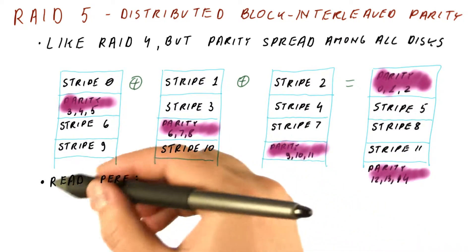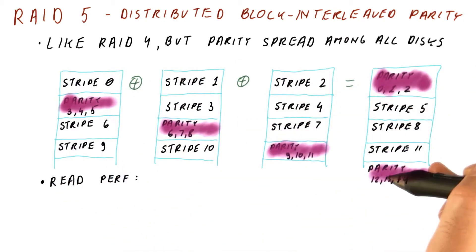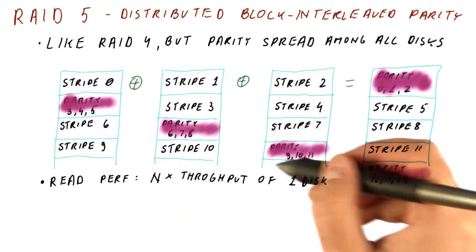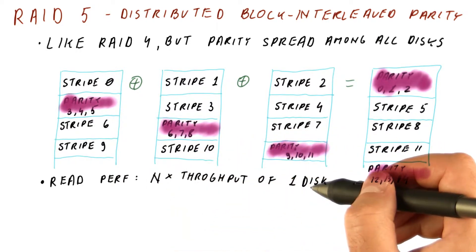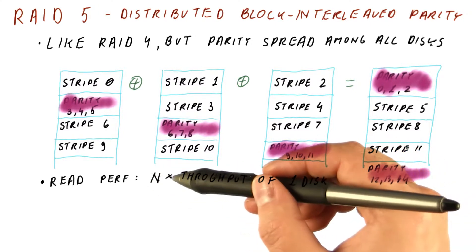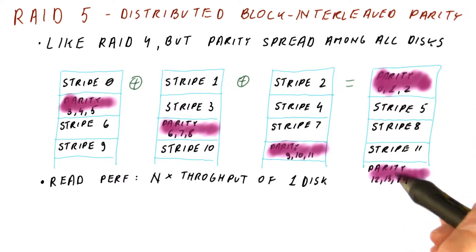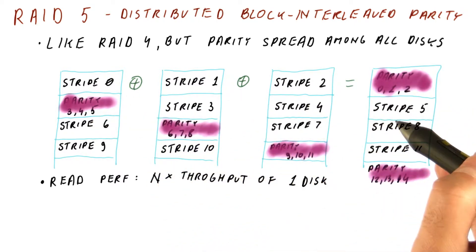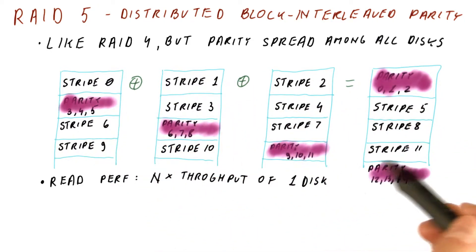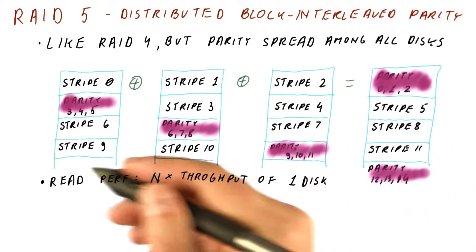So what we get is read performance where all four disks can actually be used for reading data, and we get n times the throughput of one disk. Remember that RAID 4 was getting n minus 1 times the throughput of one disk, because one of the disks was not used for data. Here, the data is spread over all four disks, so chances are all the blocks we want to read will be equally distributed among the four disks.